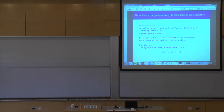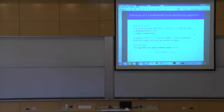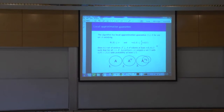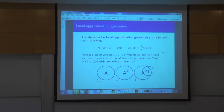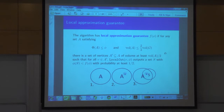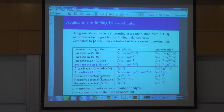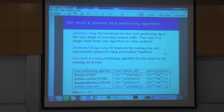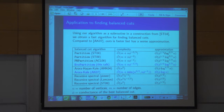We want to find some cut with conductance not too much larger than phi, without doing too much work. The number of steps of the algorithm should be controlled in terms of the volume of the set we find. We want some approximation guarantee: if the real conductance is phi, we want to find a set with conductance at most f(phi). The function f tells how much worse we're doing than the optimum. The people who introduced this as a theoretical topic were Spielman and Teng.